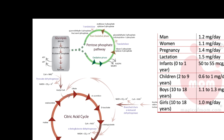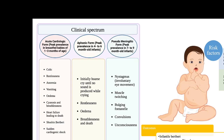The daily thiamine requirement is: men 1.2 mg, women 1.1 mg, during pregnancy 1.4 mg, during lactation 1.5 mg. Infants 0–1 year: 50–55 micrograms. The requirement gradually increases with age, and by 10–18 years it is about 1.1–1.3 mg in boys and 1 mg in girls.